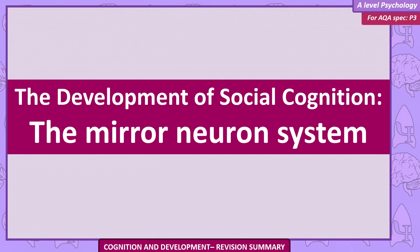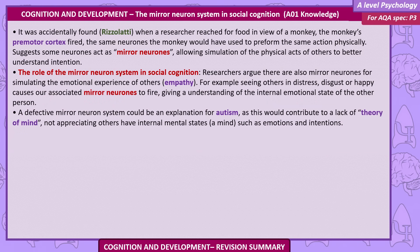The role of the mirror neuron system in social cognition. It was accidentally found by Rizzolatti: when a researcher reached for food in view of a monkey, the monkey's premotor cortex fired — the same neurons the monkey would have used to perform the same action physically. This suggests some neurons act as mirror neurons, allowing simulation of the physical acts of others to better understand intention. Researchers argue there are also mirror neurons for simulating the emotional experience of others — empathy. For example, seeing others in distress, disgust, or happiness causes our associated mirror neurons to fire, giving an understanding of the internal emotional state of the other person. A defective mirror neuron system could be an explanation for autism, contributing to a lack of theory of mind and not appreciating that others have internal mental states such as emotions and intentions.